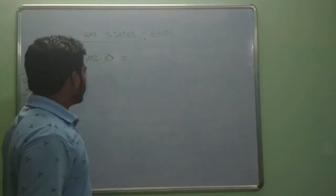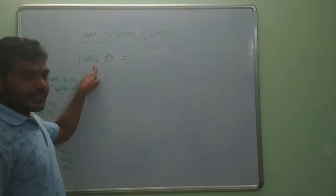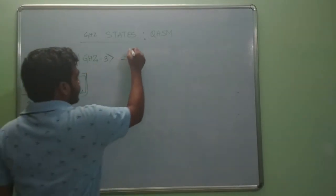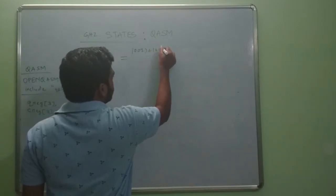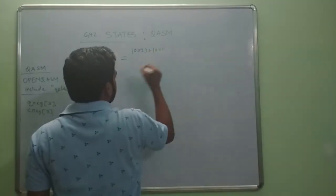In this lecture we will design the GZ state, which is the state 001 plus 110 divided by root 2.